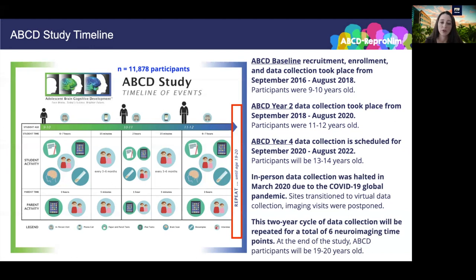Moving forward, this two-year cycle will be repeated several times, including the long in-person visit, followed by mid-year phone calls at three to six months, a shorter in-person visit without neuroimaging at the one-year mark, and a second round of mid-year phone calls at 18 months. This two-year cycle will be repeated until ABCD participants are 19 to 20 years old, for a total of six neuroimaging time points. In this way, longitudinal data collection will span from pre-adolescent ages of 9 to 10 years old to emerging adulthood ages of 19 to 20 years old, thus capturing that adolescent time period of development.